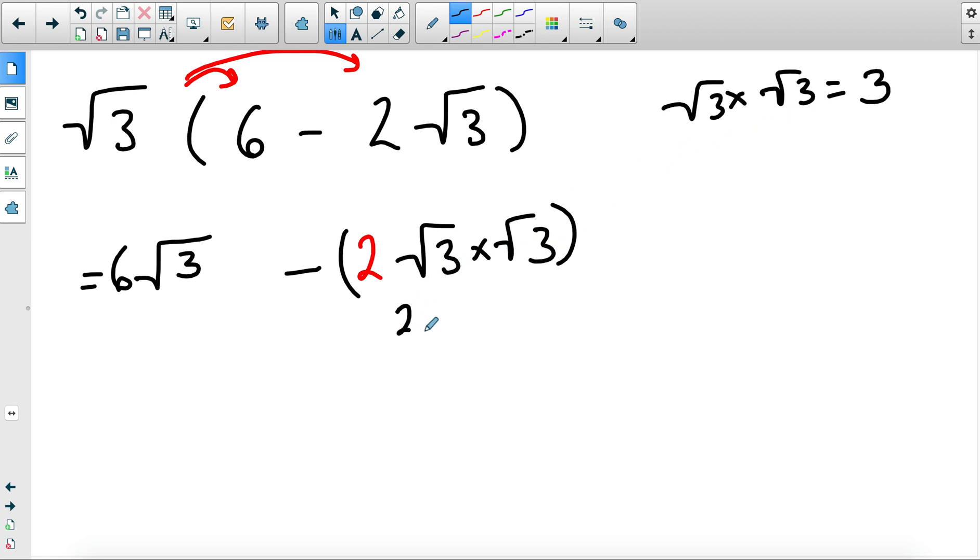Well we know square root of three times square root of three is three, so it's still two times three which will be six. So I have six square root of three minus six. You can factorize it but that's the opposite of expanding it, so we keep it in this form: six square root of three minus six. That's as simple as it gets.